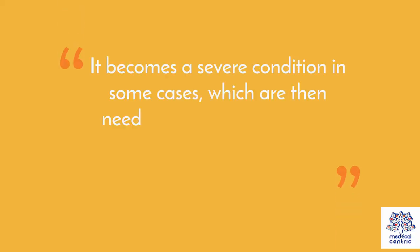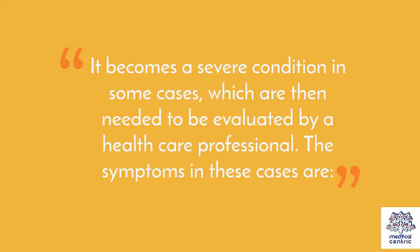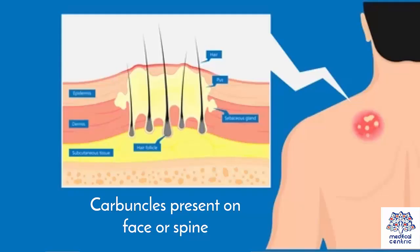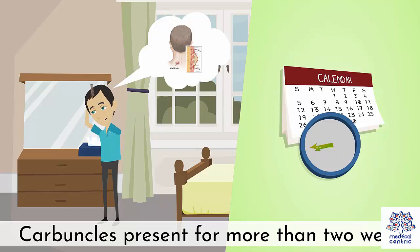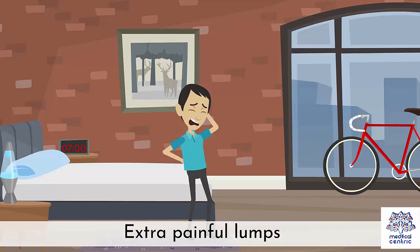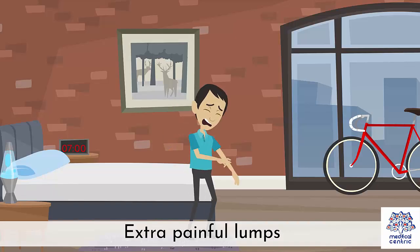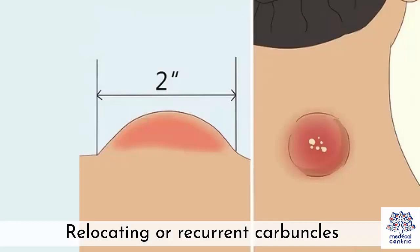It becomes a severe condition in some cases, which then need to be evaluated by a healthcare professional. The symptoms in these cases include carbuncles present on the face or spine; carbuncles present for more than 2 weeks; extra painful lumps; and relocating or recurrent carbuncles.